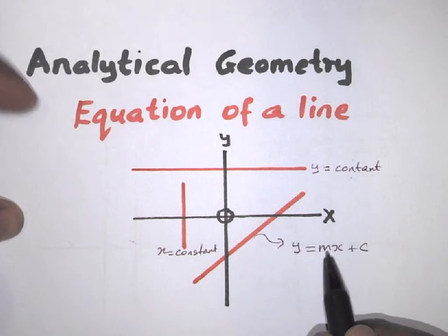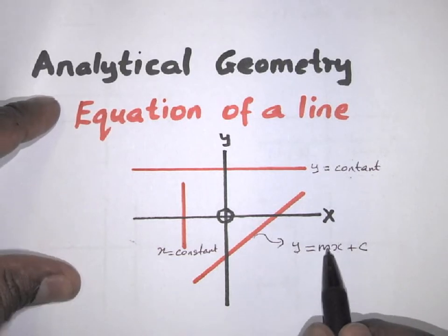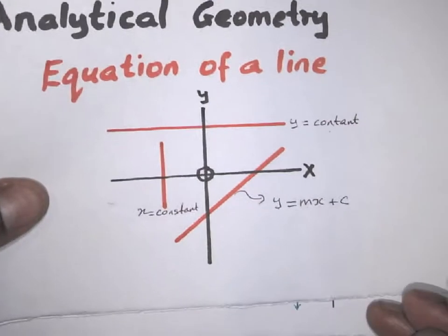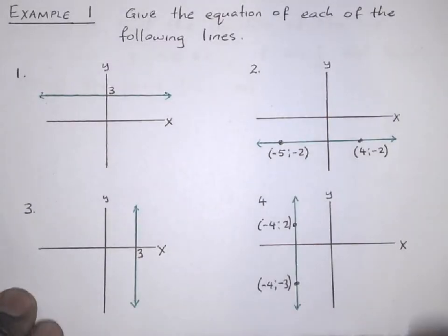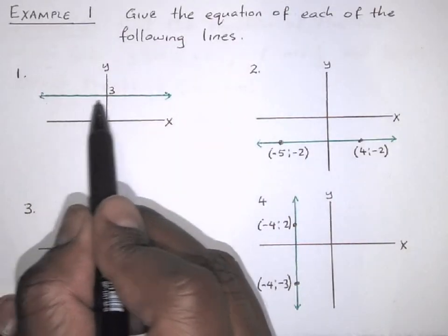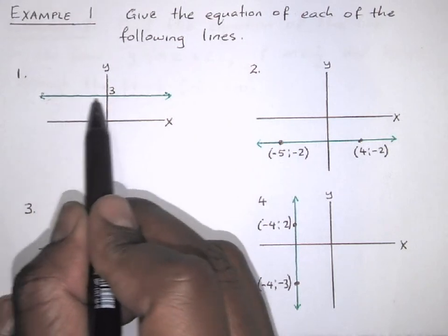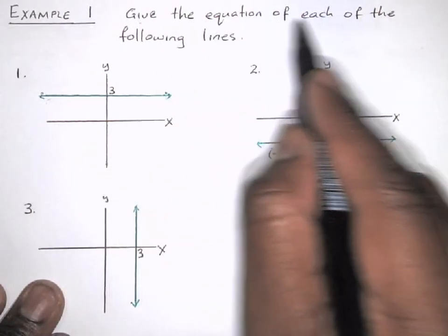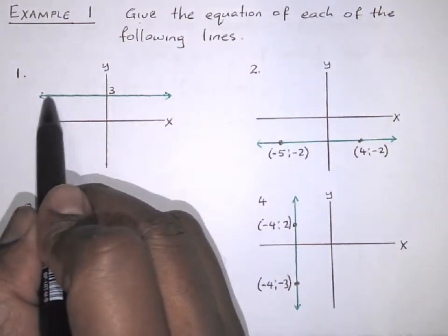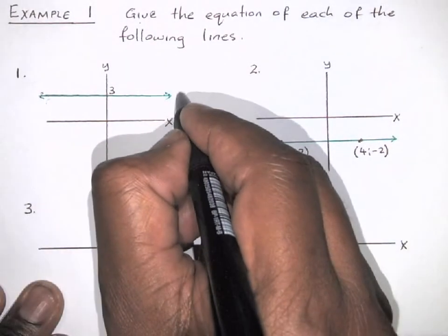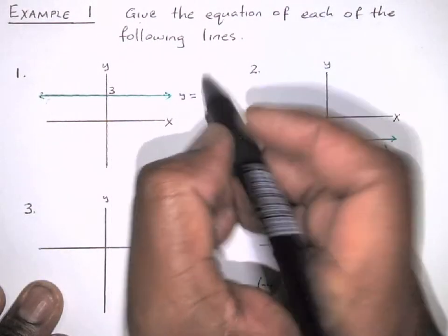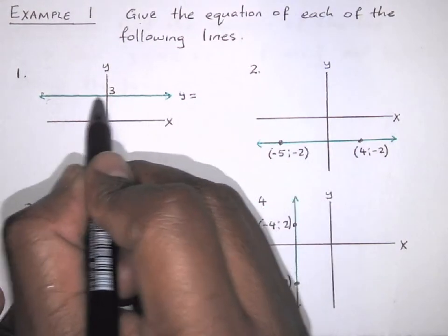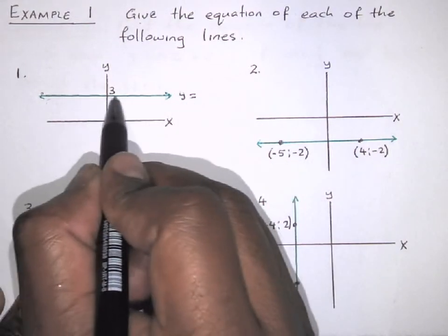Now remember that m is the gradient. We know how to find the gradient of a line. Let's look at some examples. Here is this green line — it only cuts the y-axis. Therefore, the equation: because we need to give the equation of each of the following lines, the equation of this line is y equals a constant. The constant on this line is the y-value, and the y-value is 3.